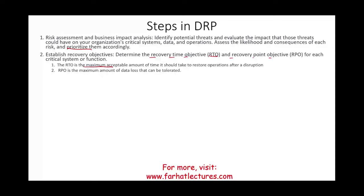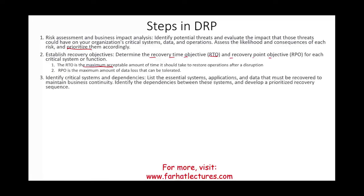You need to establish your recovery objective. Then you identify critical systems and dependencies — list essential systems, software, processes, personnel, applications, and data that must be recovered to maintain business continuity. You should also identify the dependencies between systems: does the company need system A alone, or systems A, B, and C all running together in order to function?